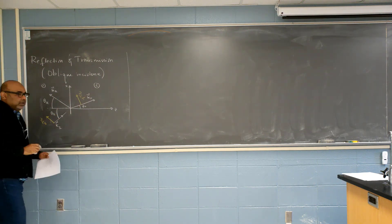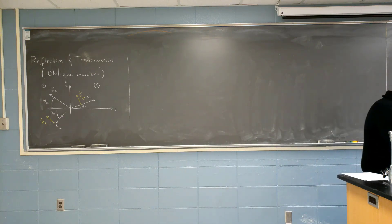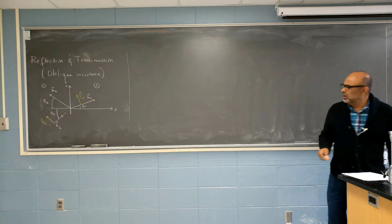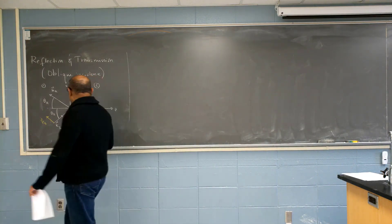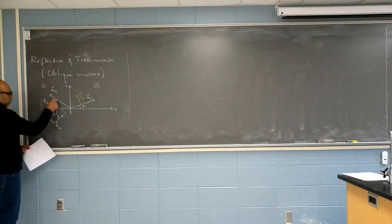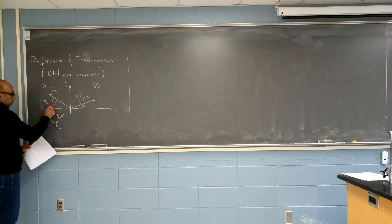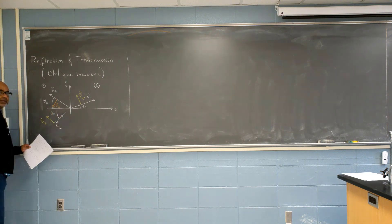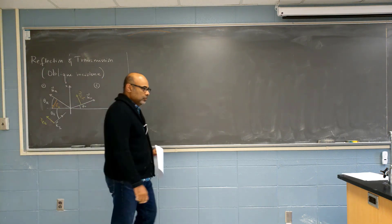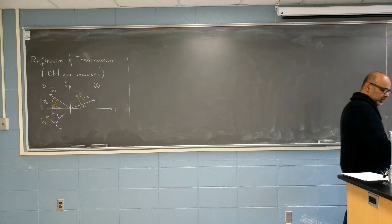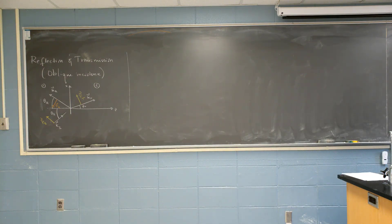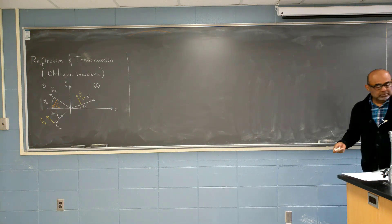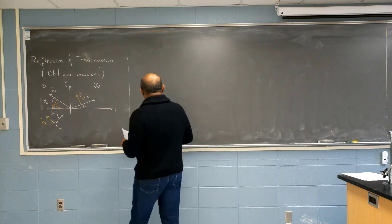And I'm going to call this vector perpendicular to be P transmitted. And here's the anomaly — look for this. And my reflected vector — I'm going to call this P reflected. You might say, why did I choose this? There's a method to this. Then K I cross P I — can you tell me what K I cross P I is?